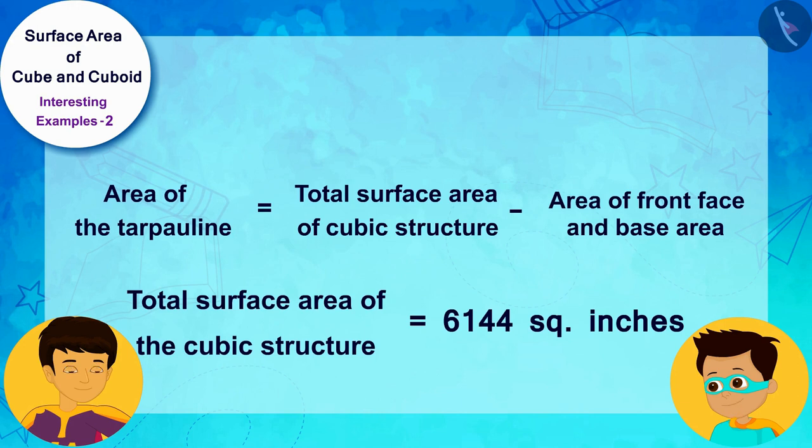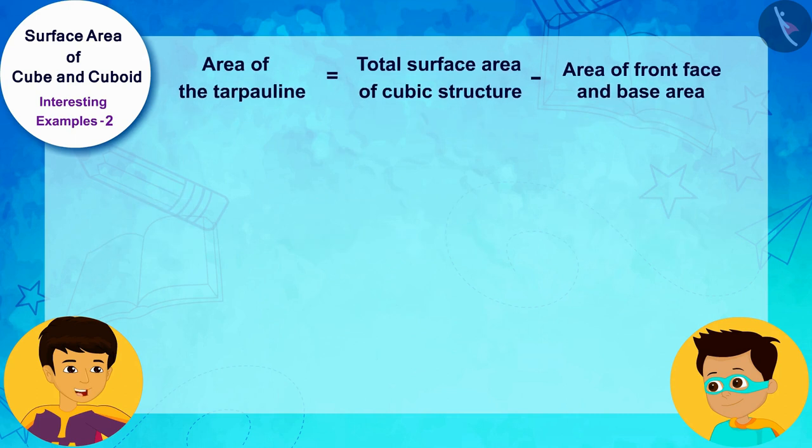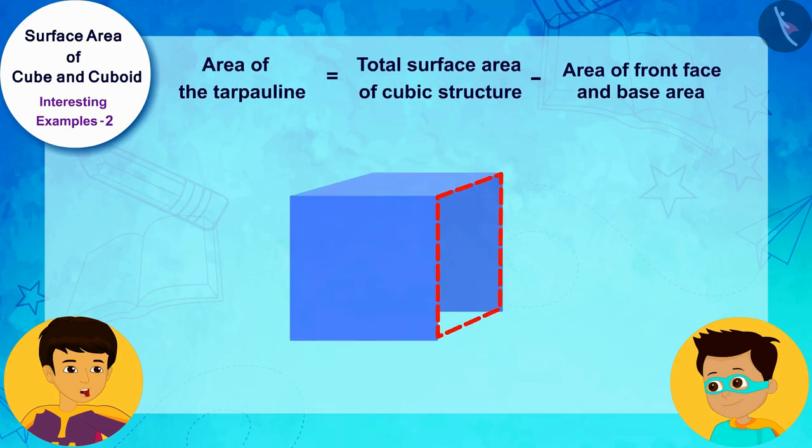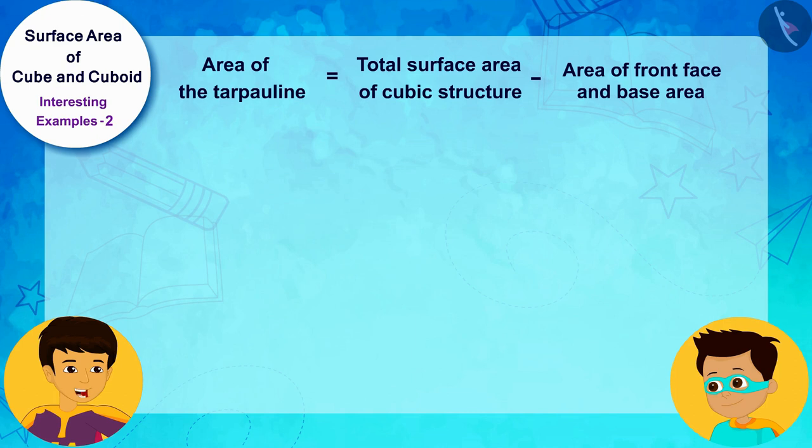Both the front and base area are congruent, therefore their areas will be the square of the measurement of their sides. In this way, the sum of the areas of the two surfaces will be 2 times the square of the measure of the sides. The length of the sides of the structure is 32 inches.